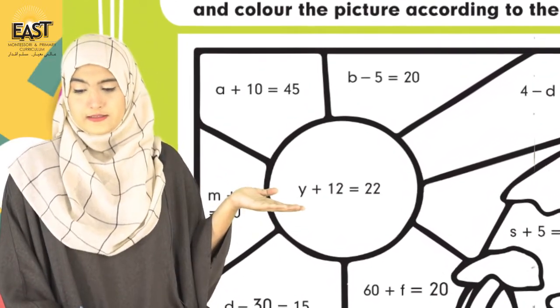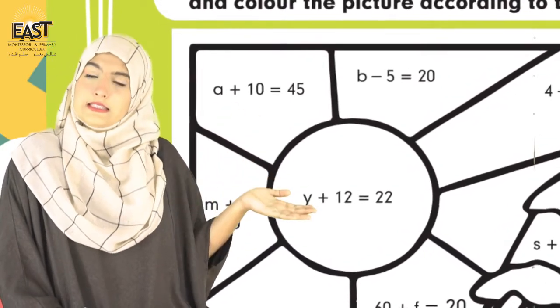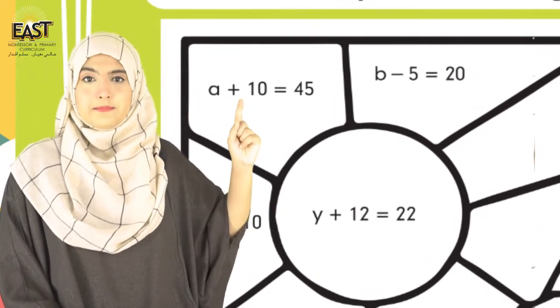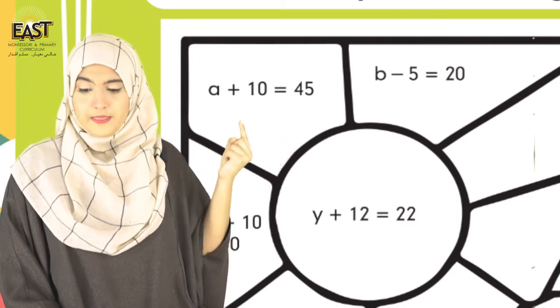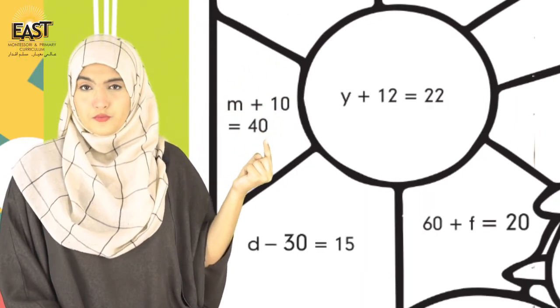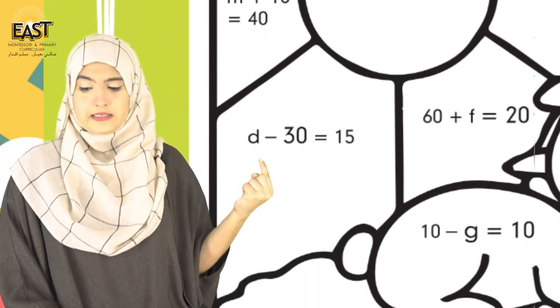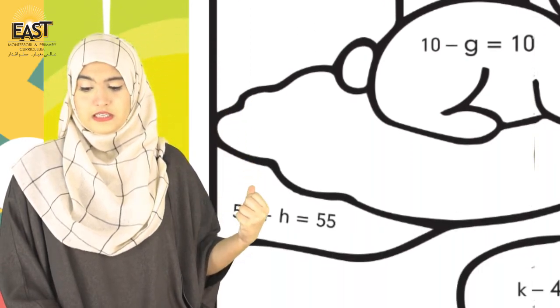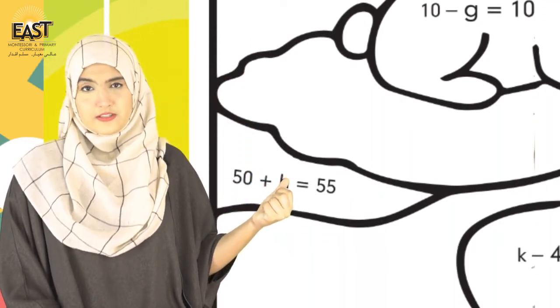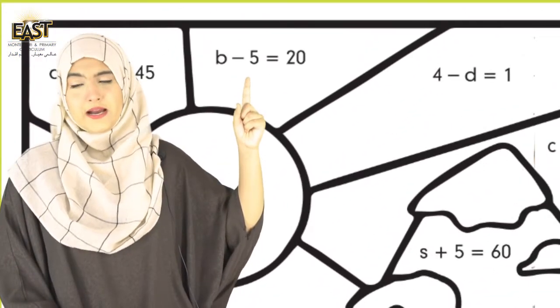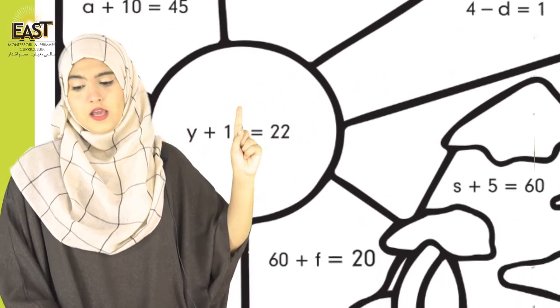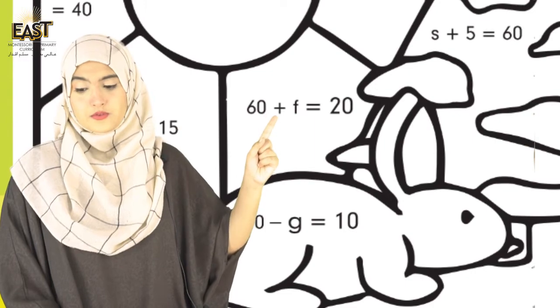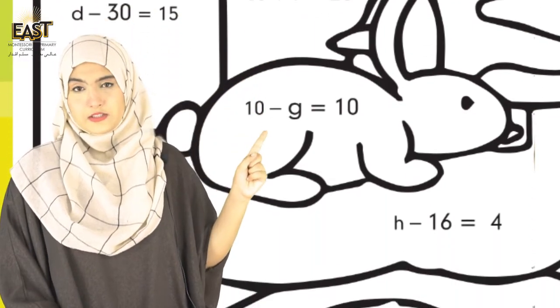This is an exercise. Ab aap souch rahe hoongge ki yahaan itni saari equations ti hoi hai - yes, yeh bohat saari equations hai. a+10=45, n+10=40, d-30=15, 50+h=55, b-5=20, y+12=22, 60+f=20, 10+g=10.